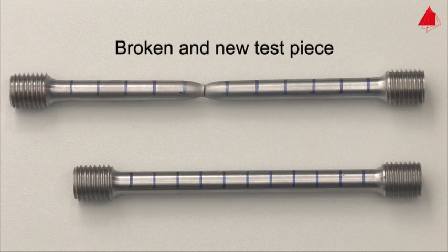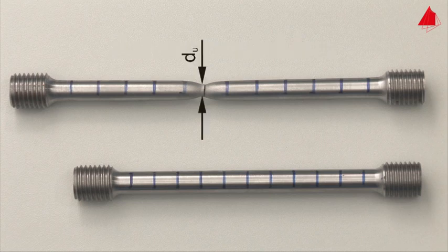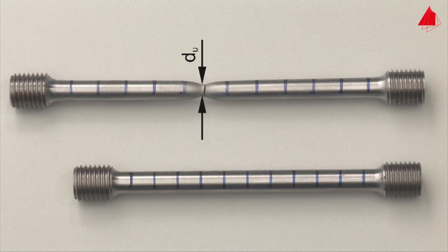Please note that the percentage elongation after fracture depends on the length to diameter ratio. By measuring the smallest diameter at the point of fracture, the percentage reduction of area can be calculated. It describes the reduction of cross-sectional area at the point of fracture in relation to the original cross-sectional area.